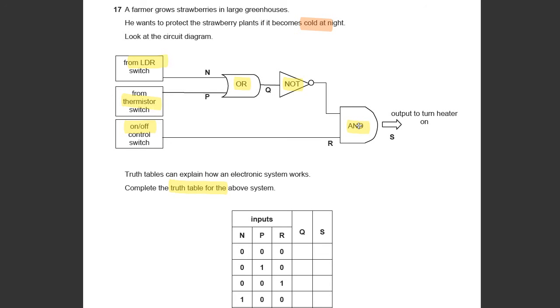A NOT just returns the opposite. It's what is it not, if you like. So if the input of NOT is a one, the output will be a zero and vice versa.